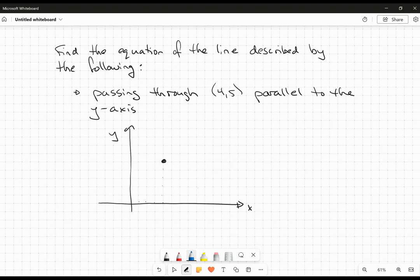We're looking for the line that is parallel to the y-axis that passes through that point. Well, that's going to be this line right here. This is a vertical line.